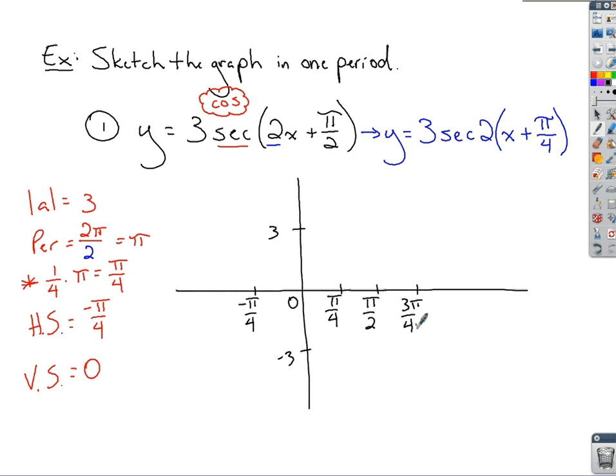So still find the same key values from before. Keeping in mind that secant goes with cosine if I needed to draw cosine. Cosine would start even here with the horizontal shift up at that amplitude value of 3. It would hit the origin, it would bottom out at π over 4, come back to the axis, and then right back at the same level where it started. Cosine would look like this.